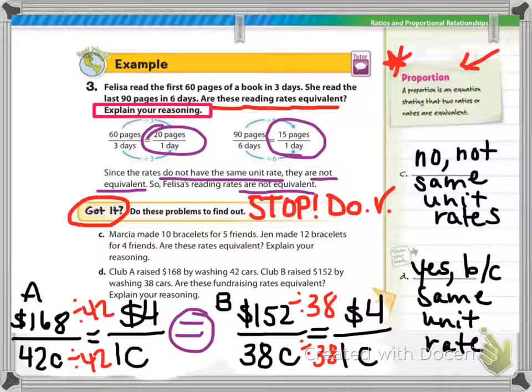All right, here you can check your answers for got it D. Club A, $168 was raised for washing 42 cars, which simplifies to $4 per car. Club B raised $152 for washing 38 cars, which simplifies to $4 per car.